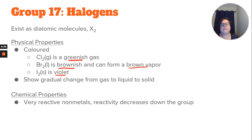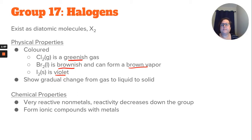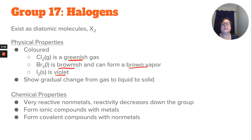For chemical properties, they're very reactive nonmetals, and reactivity decreases as you go down the group because the atom is getting larger, so there's more shielding and the nucleus has to work harder to attract electrons. They form ionic compounds with metals and covalent compounds with other nonmetals.